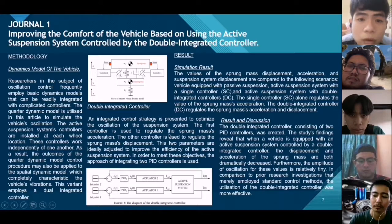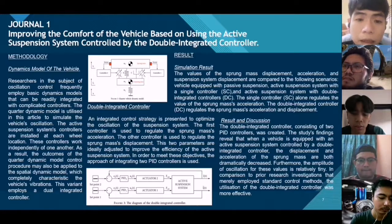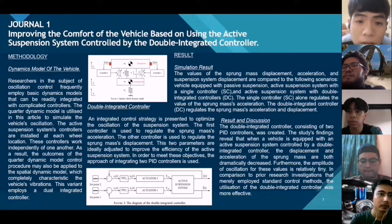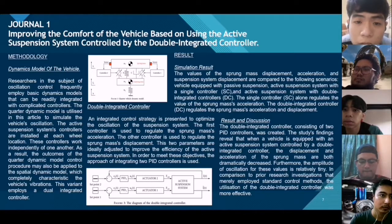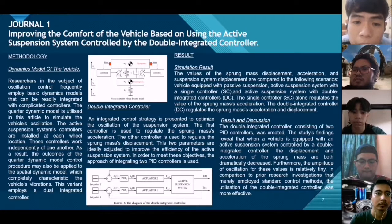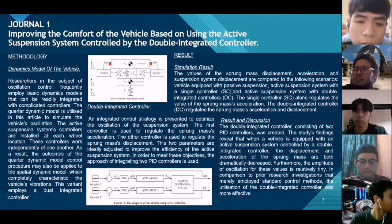This variant employs a dual integrated controller. An integrated controller strategy is presented to optimize the oscillation of the suspension system. The first controller is used to regulate sprung mass acceleration and the other to regulate sprung mass displacement. These two parameters are ideally adjusted to improve the efficiency of the active suspension system. The approach of integrating two PID controllers is used. This is an image of the double integrated control.